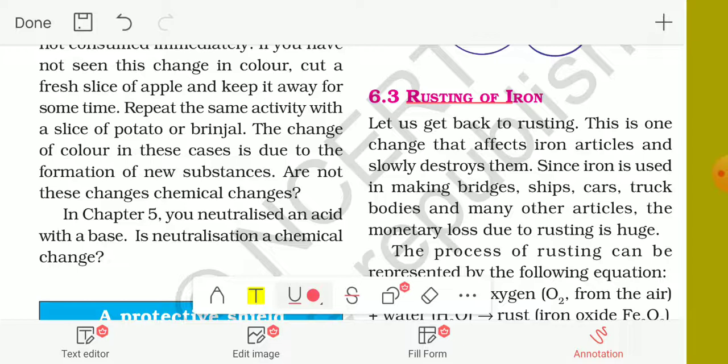And this is one change that affects iron articles and slowly destroys them. The iron articles are affecting the other processes. Slowly the article is destroyed.